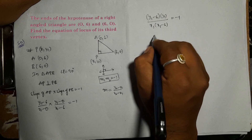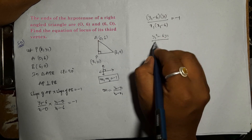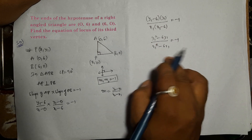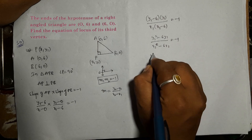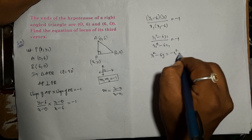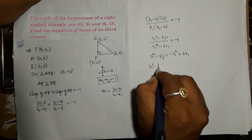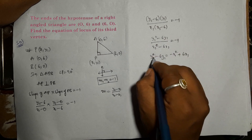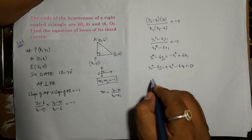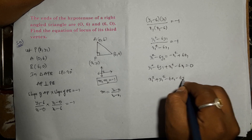Expanding: (y1 - 6) × y1 divided by x1 × (x1 - 6) = -1. So y1² - 6y1 = -(x1² - 6x1), which gives y1² - 6y1 + x1² - 6x1 = 0. Rewriting in order: x1² + y1² - 6x1 - 6y1 = 0.